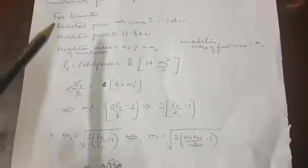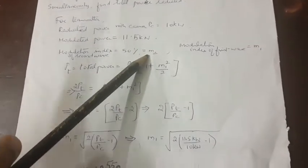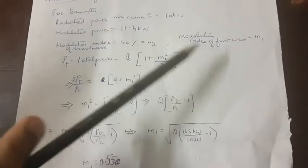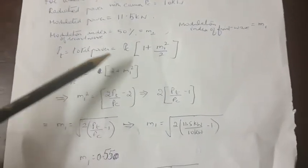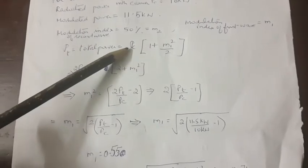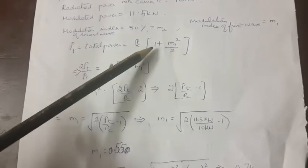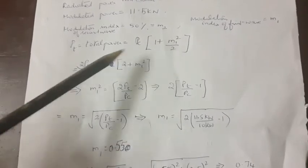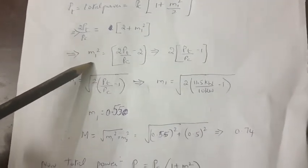First, find the modulation index assuming two waves have been propagated. The second wave is given as M2 = 0.5 (50% modulation). The first wave's modulation index M1 is unknown. The total power equation is: PT = PC × (1 + M1²/2). Rearranging: 2PT/PC = 2 + M1².